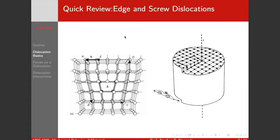There are two big players in the dislocation world that we need to consider. Starting with the edge dislocation, because it's a little easier to visualize. Here we have a crystal, all happy, and all of a sudden we come against this extra half plane of atoms sitting here. This extra half plane of atoms — we said a dislocation is a line defect — so where's the line? Well, it's running into and out of the board; it's the edge of this extra half plane of atoms.